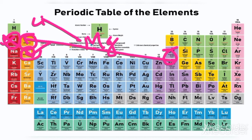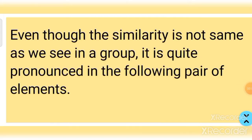Then, where is the next exam pair? Boron and silicon are similar characters. Even though the similarity is not the same as we see in a group, it is quite pronounced in these diagonal pairs of elements.